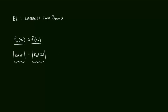According to Lagrange error bound, the error is actually equal to — and there's a very important symbol here, equal to — the (n+1)th derivative of the function at some number c, times x0 minus a to the (n+1) power, all over (n+1) factorial.